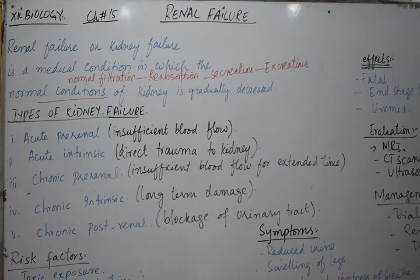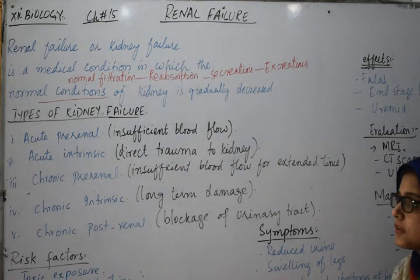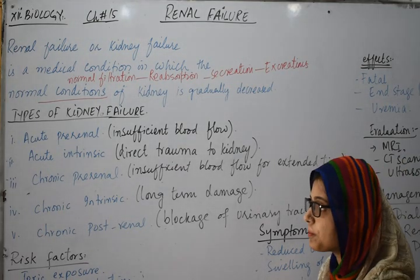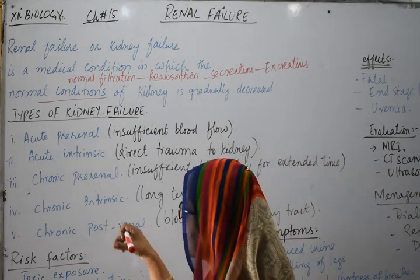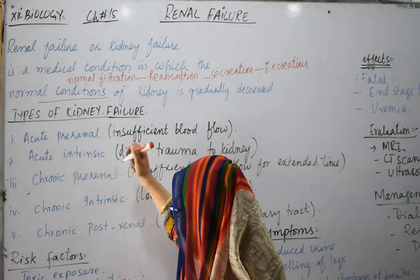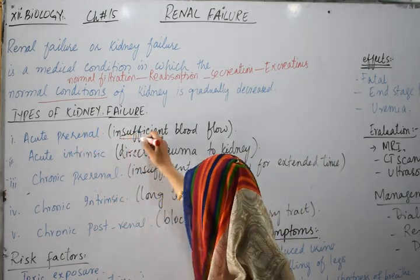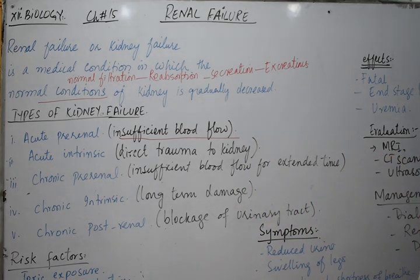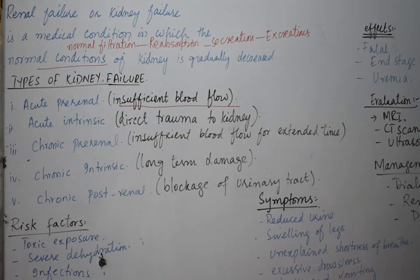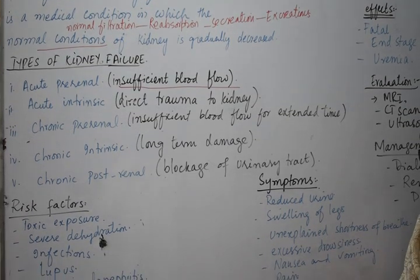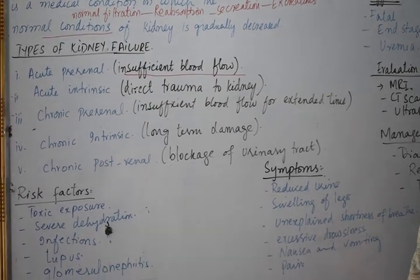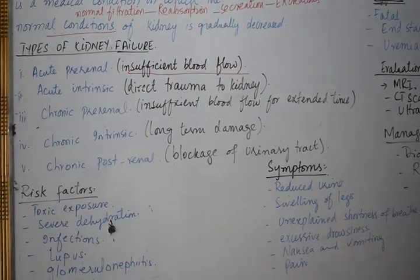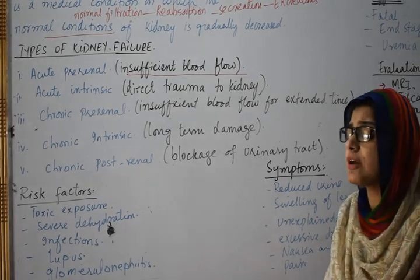Within the acute and chronic categories, there are further divisions. The first is acute pre-renal, which is due to insufficient blood flow towards the kidney. In the renal artery or renal vein, if blood circulation per minute is not normal, the kidney cannot perform properly.